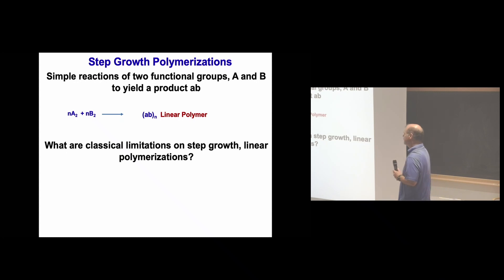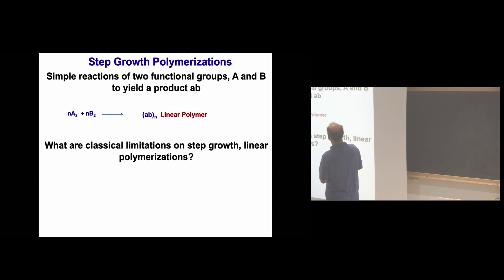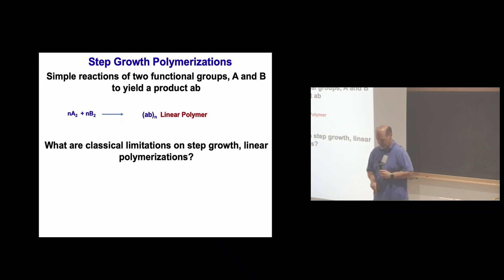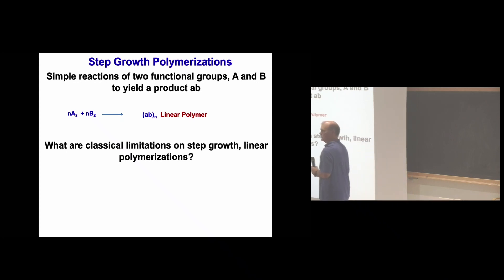Step-growth polymerizations: simple reactions. If I have an A2 plus B2 polymerization, I just get an AB linear polymer with alternating repeat units. Why don't we have commercial polymers made that way?